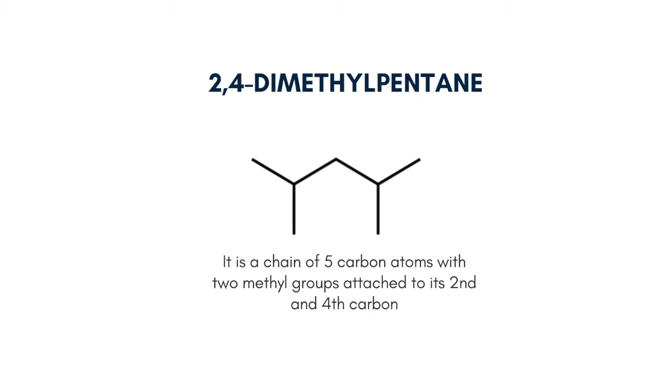The seventh one is 2,4-dimethylpentane, which is a chain of 5 carbon atoms with methyl groups attached to its second and fourth carbon.